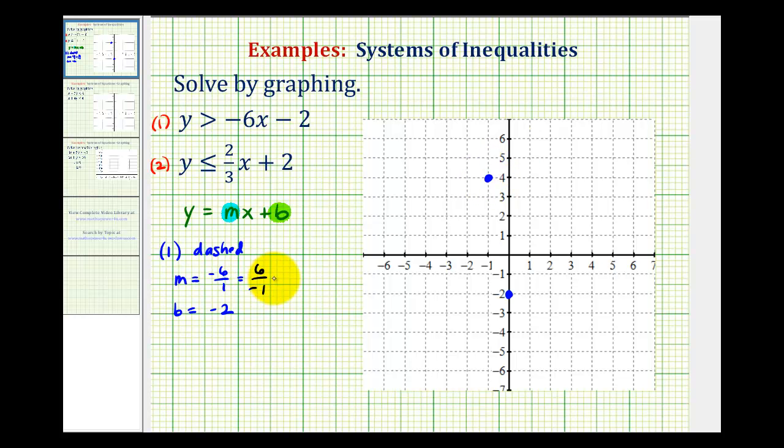So our dashed boundary line passes through these two points. And because it says y is greater than negative six x minus two, we're going to shade above the line, which in this case looks more right.